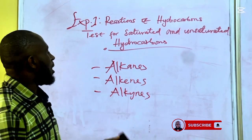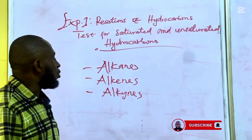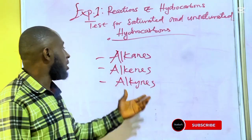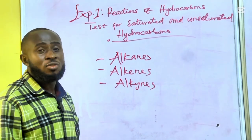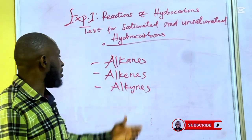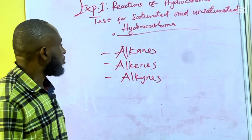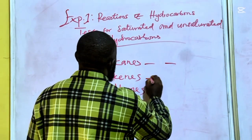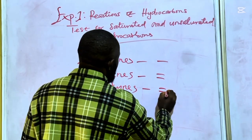This is the classification of hydrocarbons. The bonds of these classes of hydrocarbons affect the way they act as functional groups — the bonds that exist between the carbons. Alkane has a single bond, alkene has a double bond, and alkyne has a triple bond.